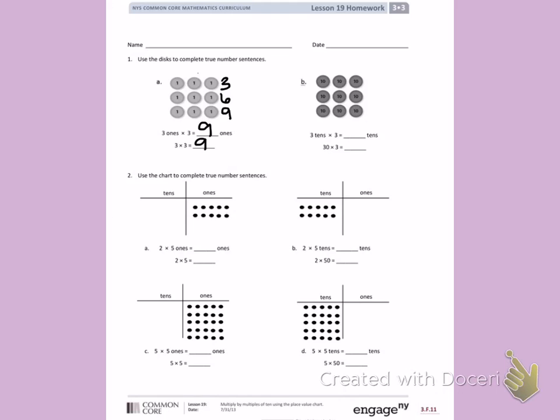Letter B. Now I have 3 10's times 3. So when I count, I still count 3 10's, 6 10's, 9 10's, giving me a total of 9 10's. I can also go back and count to help me solve 30 times 3: 10, 20, 30, 40, 50, 60, 70, 80, 90. 30 times 3 is 90.